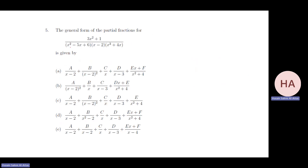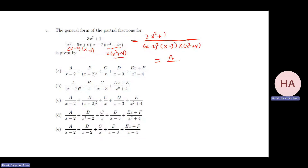For the factorization: (x-2)(x-3) is factorable; x(x²+4) has x and irreducible quadratic. So the decomposition of (3x²+1) over x²(x-2)²·(x-3)·(x²+4) gives A/(x-2) + B/(x-2)² + C/(x-3) + (Dx + E)/(x²+4).